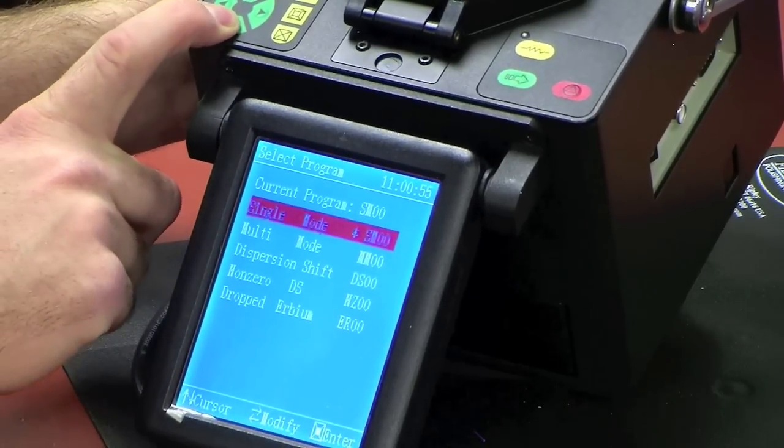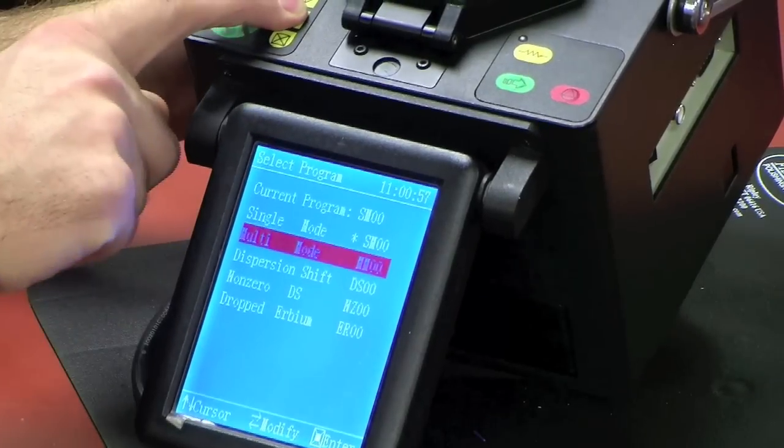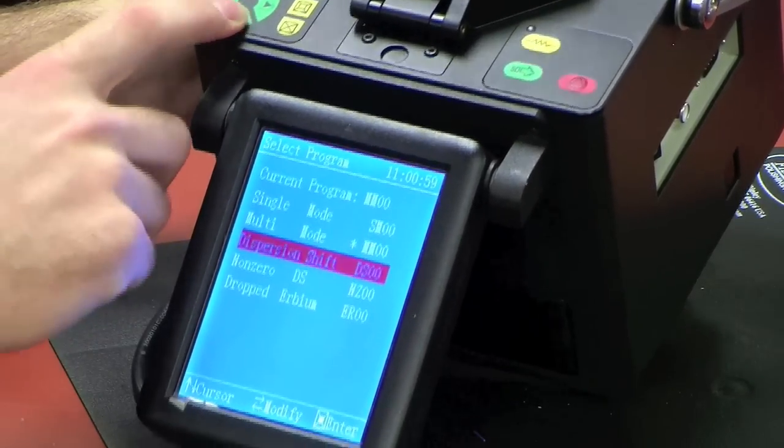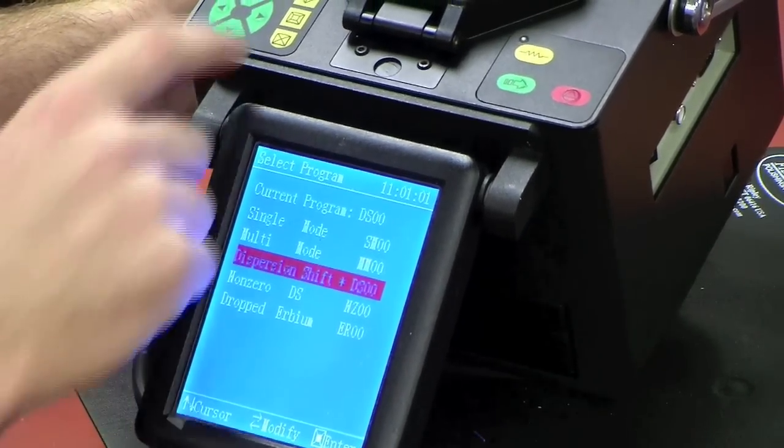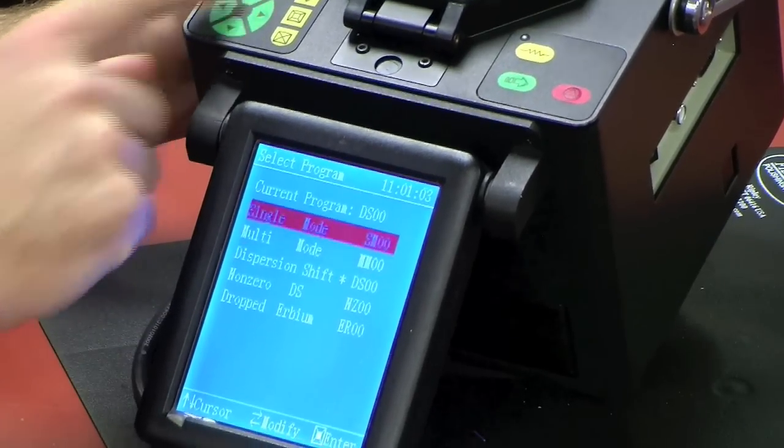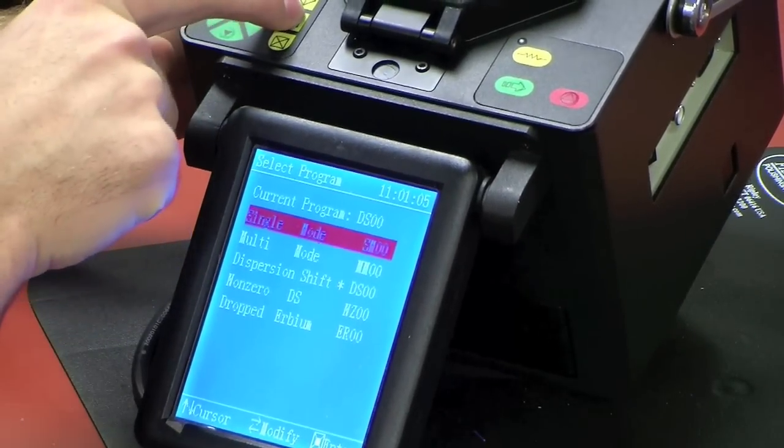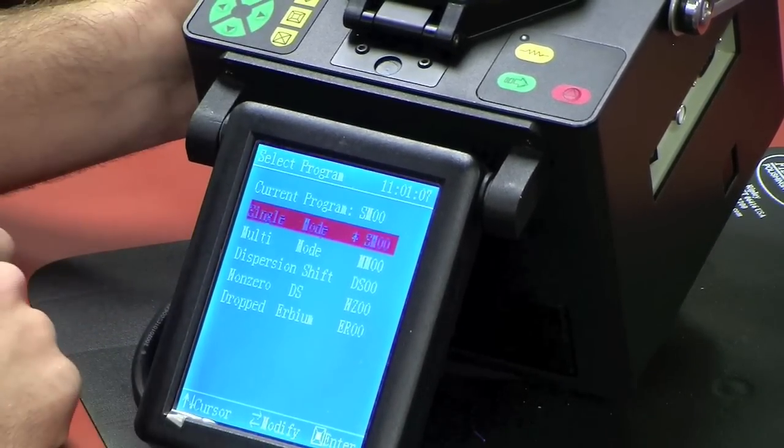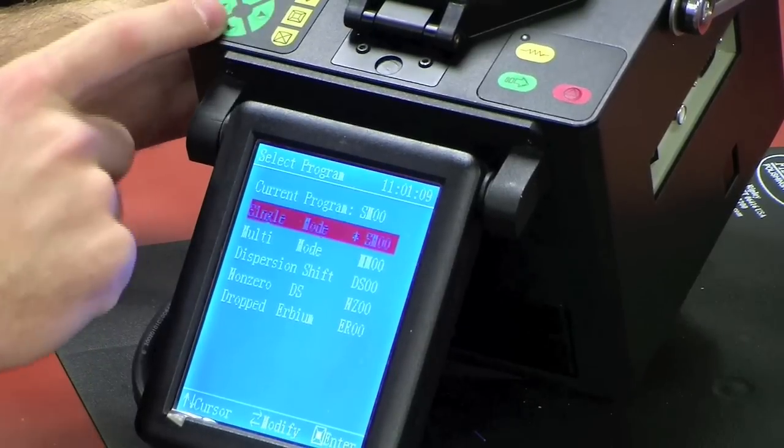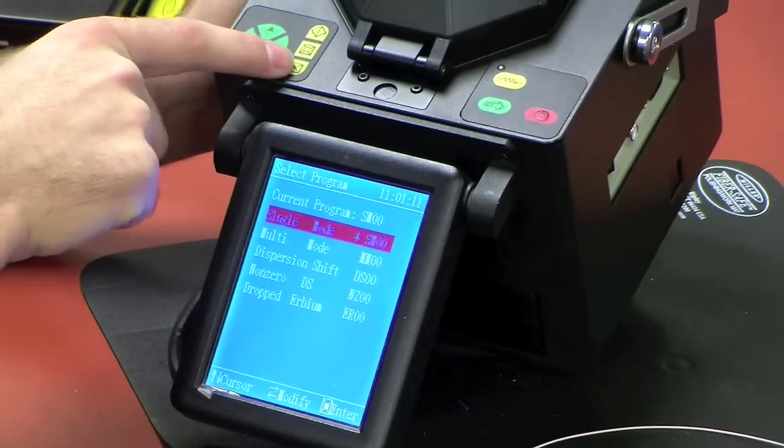If you were to change it, you would scroll down and select multi-mode or dispersion shift fiber, whatever you're doing. But we're doing single-mode, so we're going to stay on single-mode here. Click Single Mode. And now to exit back to the main menu, we'll just hit the exit here.